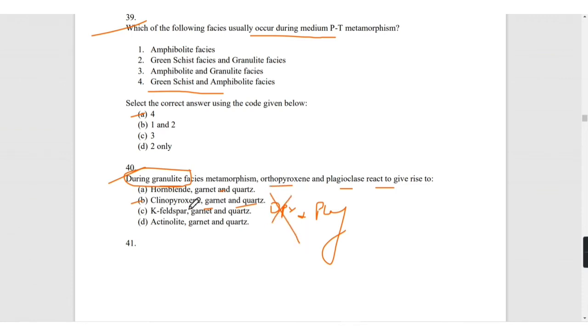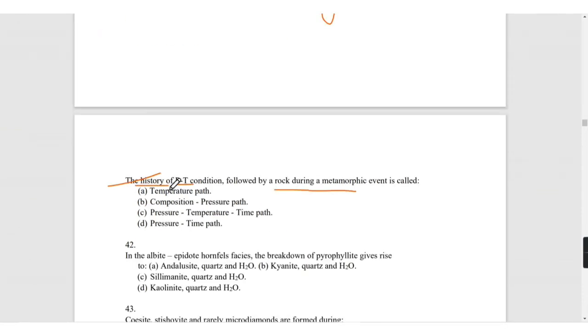The history of PT conditions followed by the rock during metamorphic event, you have seen such diagrams. This is prograde and then retrograde goes in the opposite direction. This is called pressure-temperature-time path.